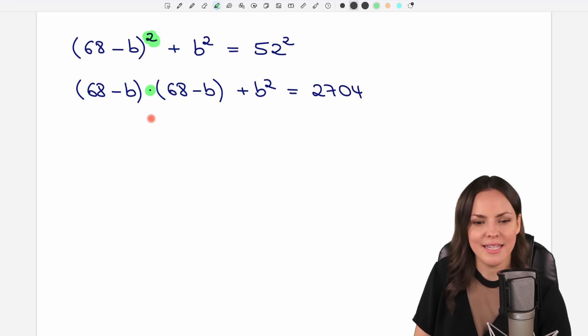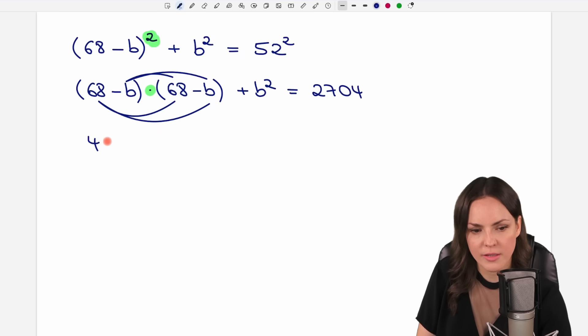Now let's multiply these parentheses by multiplying each element of the first parentheses by each element of the second. So we have 68 times 68, which equals 4624. 68 times negative B equals negative 68B. Then negative B times 68. Again, negative 68B. And the negative B times negative B equals plus B squared. Then we have this plus B squared. And on the other side, this beautiful number.